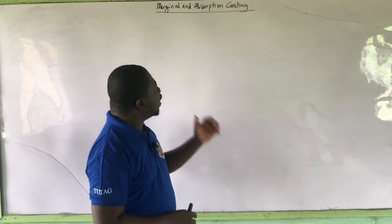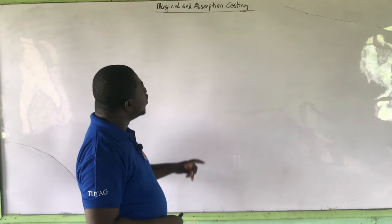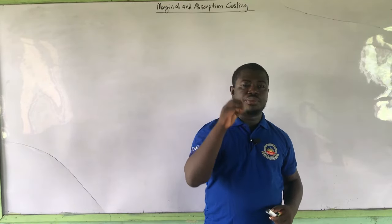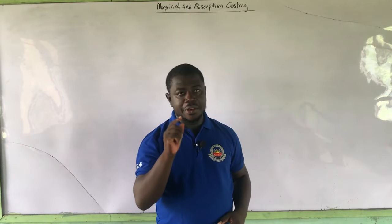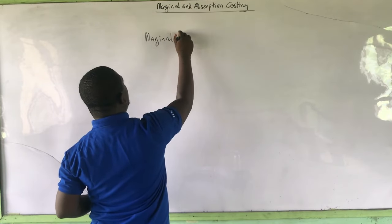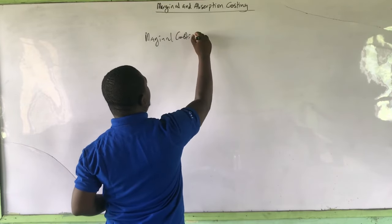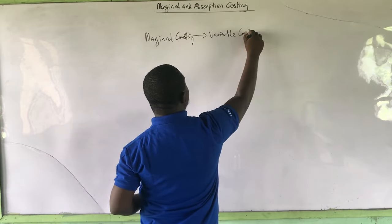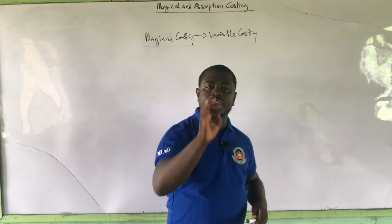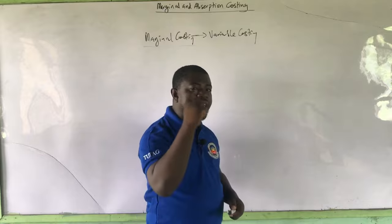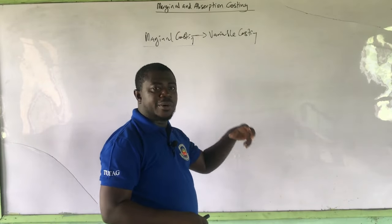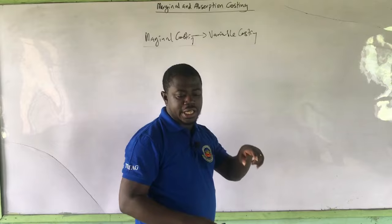We have the marginal costing approach and then we have the absorption costing approach. The marginal costing approach is a system that does not include fixed production cost in the valuation of closing stock. The marginal costing, which is also called the variable costing — marginal costing is also called variable costing. Under the marginal costing system, the key characteristic is that fixed production overheads are not included in the valuation of closing stock or closing inventory.